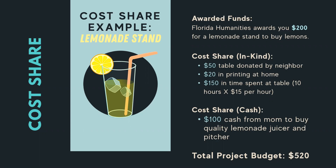So altogether: $200 from Florida Humanities plus the in-kind and cash cost share brings the total project budget to $520 — more than a one-to-one match. We require that you record all eligible cost share, including donated items and volunteer time, because we in turn must report our cost share to the federal government. These funds come from the federal government, so we need our grantees to record everything so we can report it up the line.